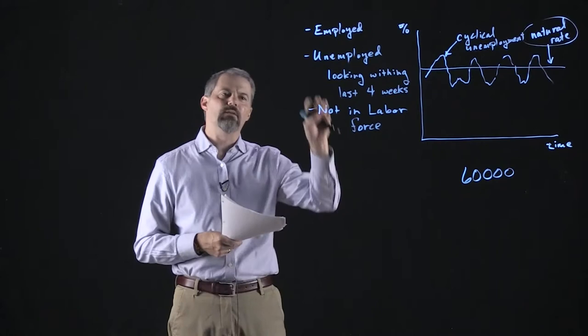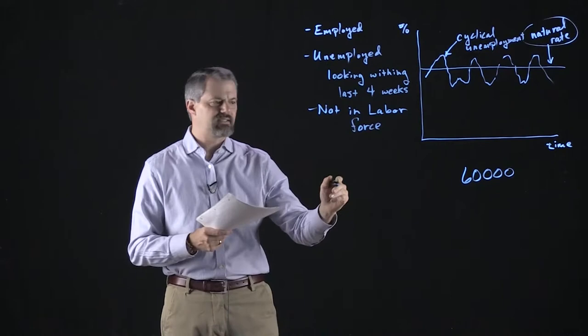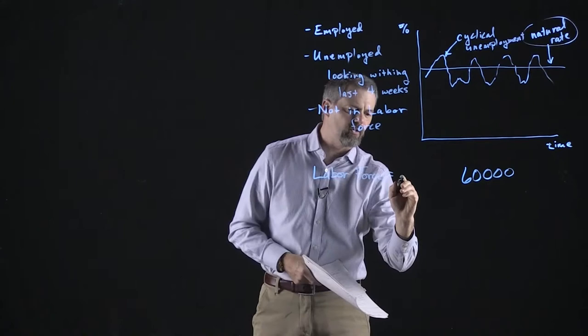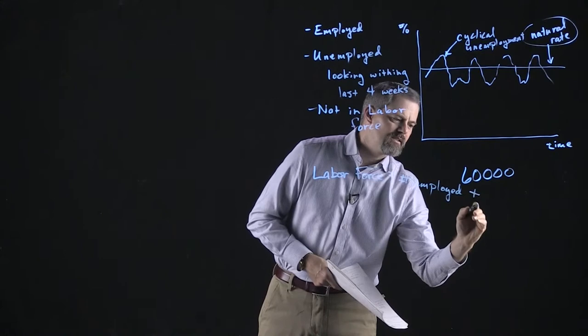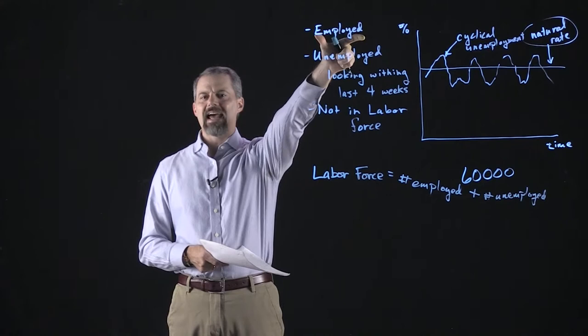Once we have the numbers for these three categories, we can calculate some statistics. The labor force is equal to the number of employed plus the number of unemployed. Those two numbers capture all the people who want to work and have a job, plus the people who want to work, don't have a job, and are actively looking.